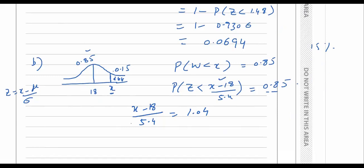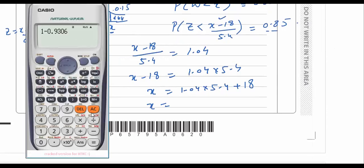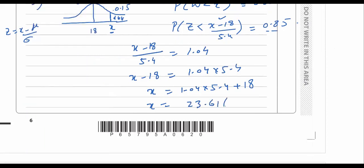Solving for x: x − 18 = 1.04 × 5.4, so x = 1.04 × 5.4 + 18 = 23.616. Therefore, the lightest package that Jemima can move is 23.616 kg.